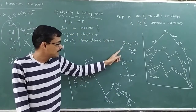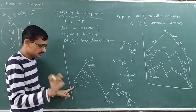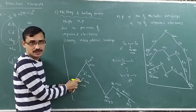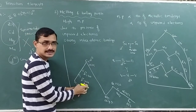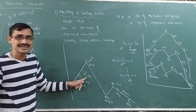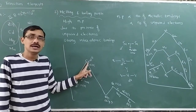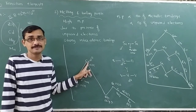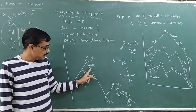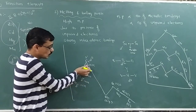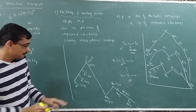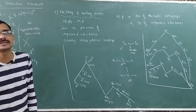Scandium D1 has a melting point of 1539 K. Titanium D2 has 1668 K. Vanadium D3 has 1900 K. Chromium has S1D5 configuration, with 5 unpaired d-electrons plus 1 in s, so its melting point is 1875 K. From scandium to chromium, as unpaired electrons increase, melting point rises from 1539 to 1875 K.